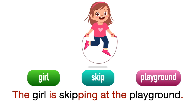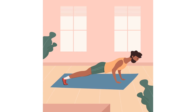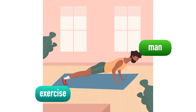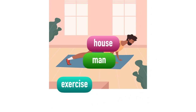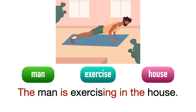Look at the picture — a man. He is exercising, and the place is house. The man is exercising in the house. Dia exercise di rumah.